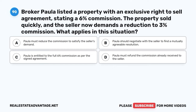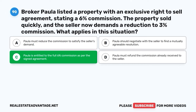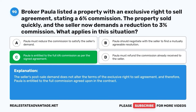Question 90. Broker Paula listed a property with an exclusive right to sell agreement, stating a 6% commission. The property sold quickly, and the seller now demands a reduction to 3% commission. What applies in this situation? A. Paula must reduce the commission to satisfy the seller's demand. B. Paula should negotiate with the seller to find a mutually agreeable resolution. C. Paula is entitled to the full 6% commission as per the signed agreement. D. Paula must refund the commission already received to the seller. The correct answer is C: Paula is entitled to the full 6% commission. The seller's post-sale demand does not alter the terms of the exclusive right to sell agreement, and therefore Paula is entitled to the full commission agreed upon in the contract.